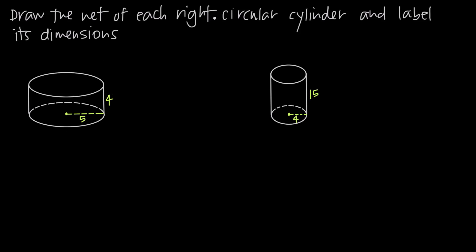In this particular video, we're dealing with right circular cylinders. The fact that it's right and circular means that the ends of the cylinder are both circles, and that the angle between the base and the top and the sides of the cylinder is a right angle, or a 90-degree angle. So we have right circular cylinders, and we want to draw the nets.